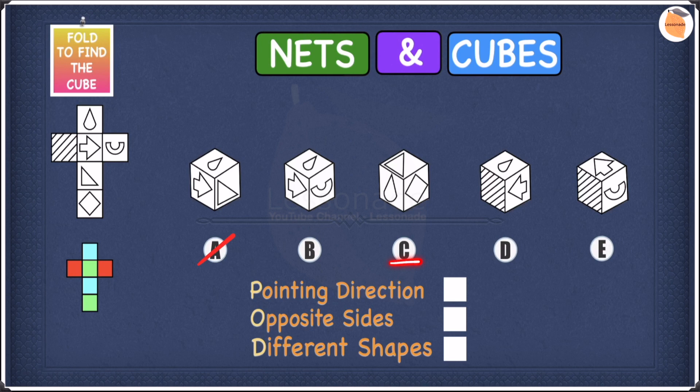In C we don't have our arrow, we cannot see the arrow, so we can keep C for now. Let's move on to D. In D the arrow is pointing towards this stripy pattern and not towards the semicircle. It's pointing at the wrong shape, so cross off D.